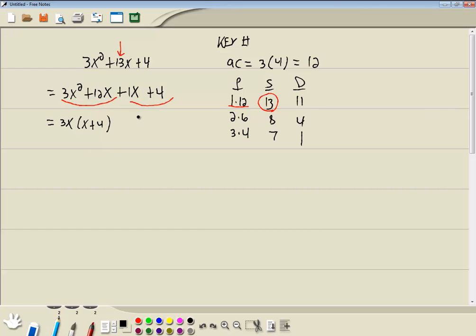Now there is no GCF of the second group, but you always want to factor something out. If you can factor nothing else out, then factor out a 1. And that leaves us (x + 4).